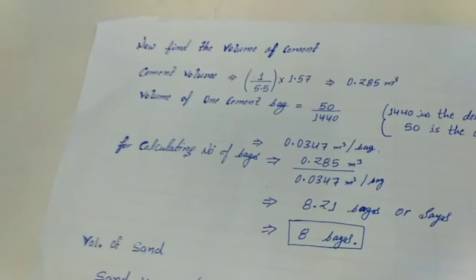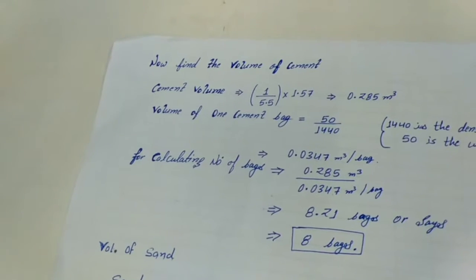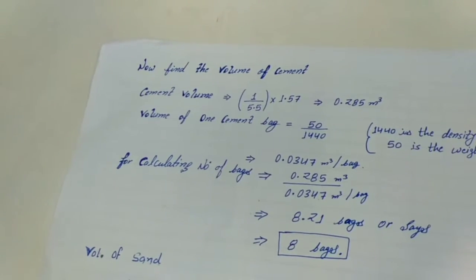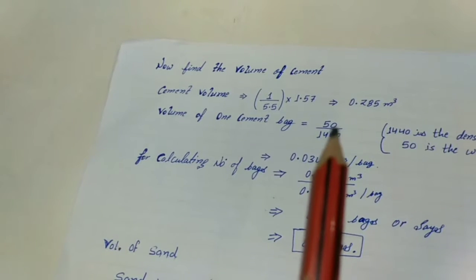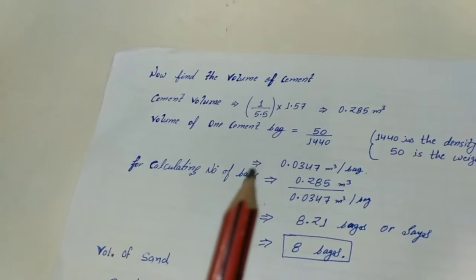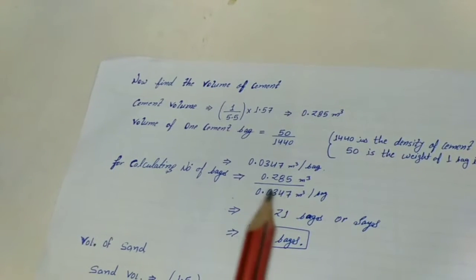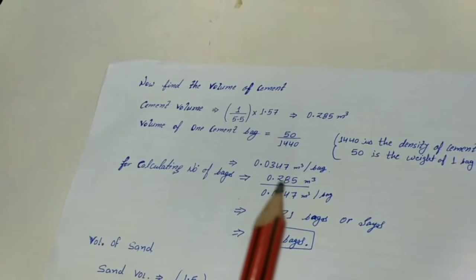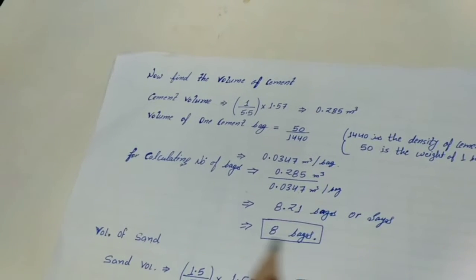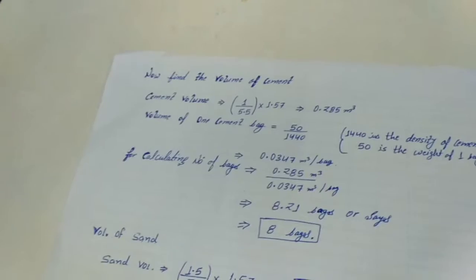Now we need to find the number of cement bags. The volume of one bag is found by dividing the weight of one bag — 50 kg — by 1440, which is the density of cement. The volume of one bag is 0.0347 cubic metres. Number of bags = 0.285 ÷ 0.0347 = 8.21 bags, or approximately 8 bags.